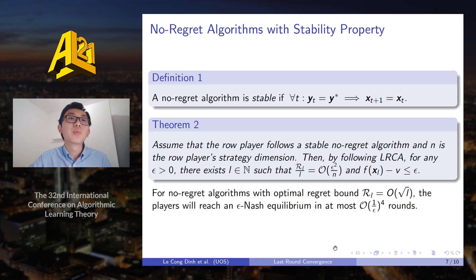So with this algorithm, we come to analyze the performance of LRCA against different no regret algorithms. The first one we choose is a class of no regret algorithms with stability property. So a no regret algorithm of the row player is stable if, in the case the column player plays a min-max strategy, then the strategy of the row player will not change.